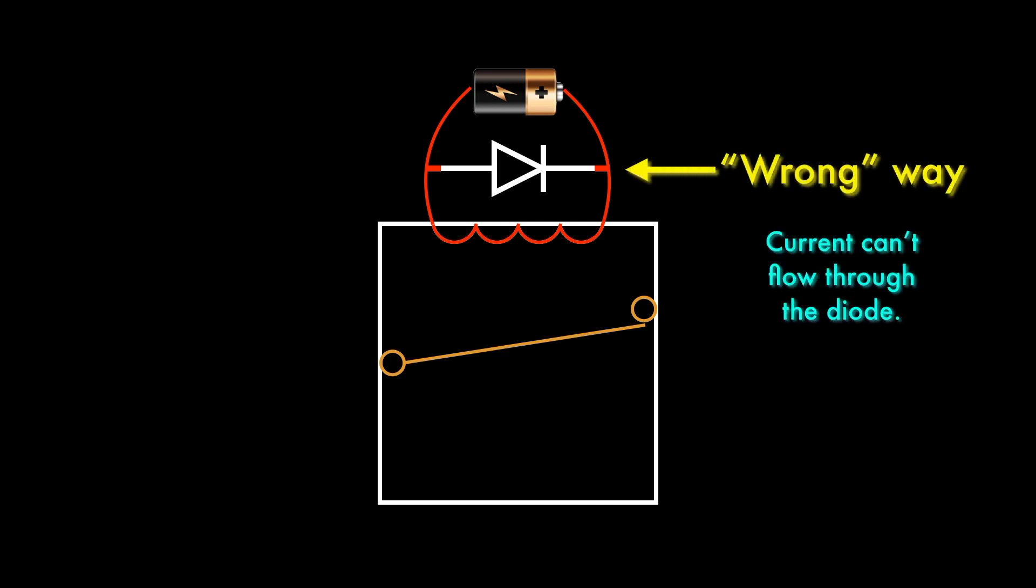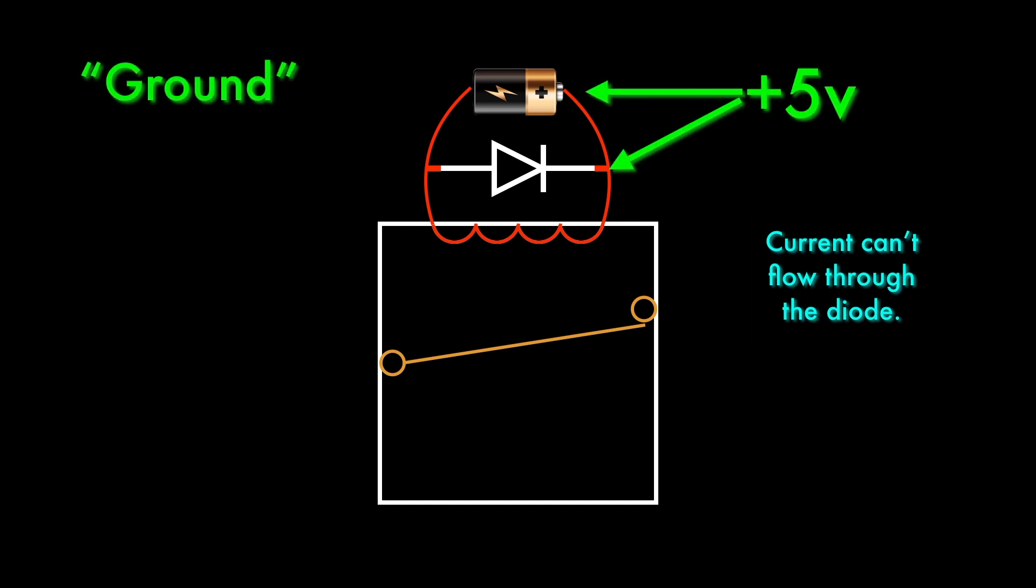When the relay is on, the potential at the top side of the diode is 5 volts, and the other side is connected to ground. The diode is reverse biased. Current wants to flow from high to low, but the diode will only allow current to flow in the other direction.